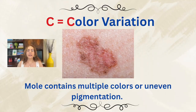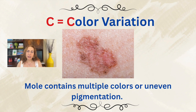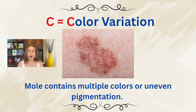Then we have C for color variation. This means that the mole or lesion contains multiple colors or uneven pigmentation. A benign mole usually has one uniform color, typically light to dark brown. But a suspicious lesion, especially melanoma, may show different shades of brown or black, or areas of red, white, pink, gray, or even blue.